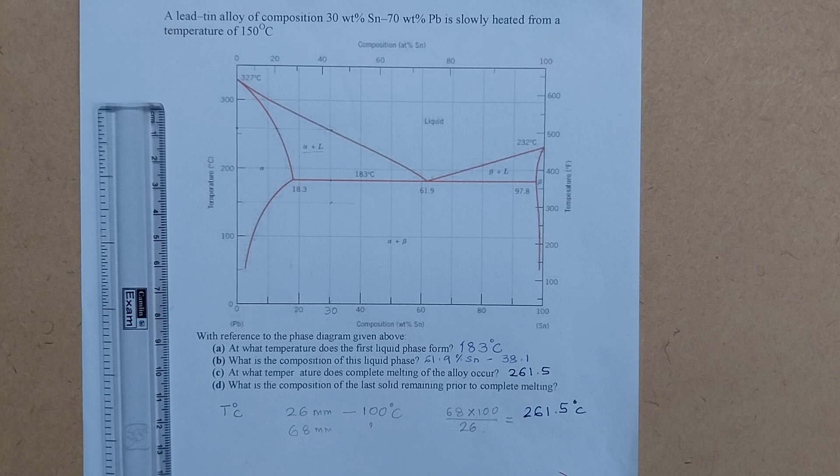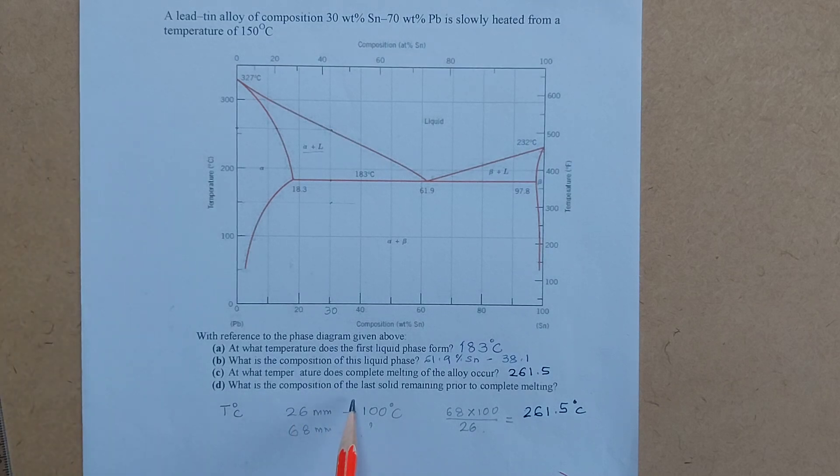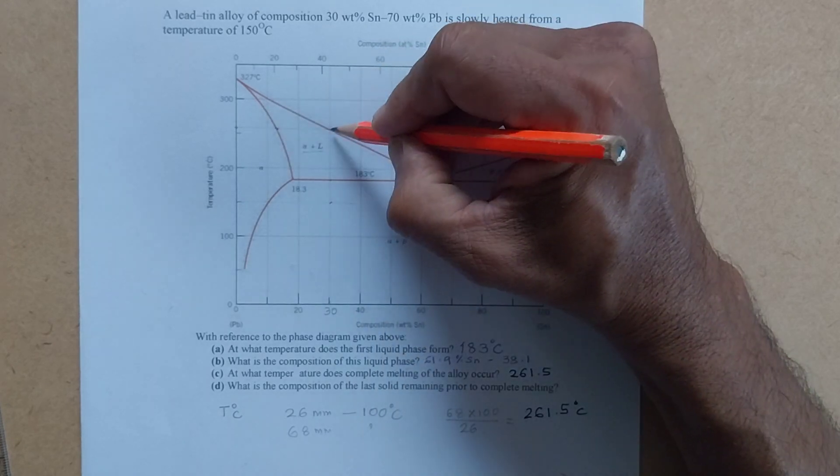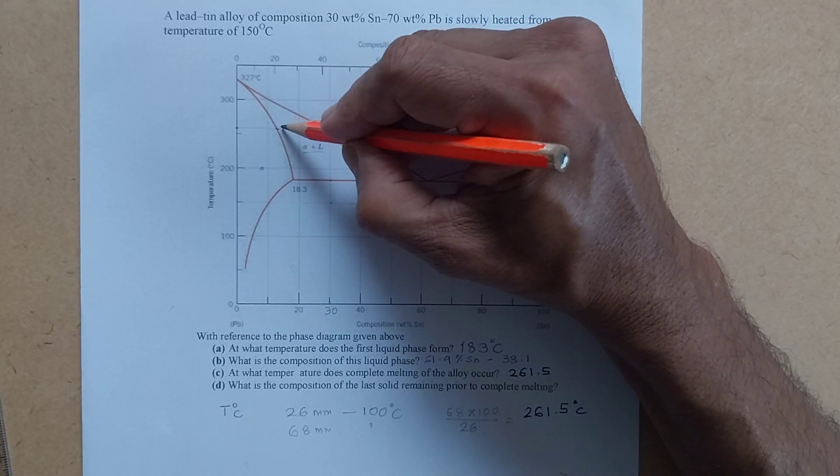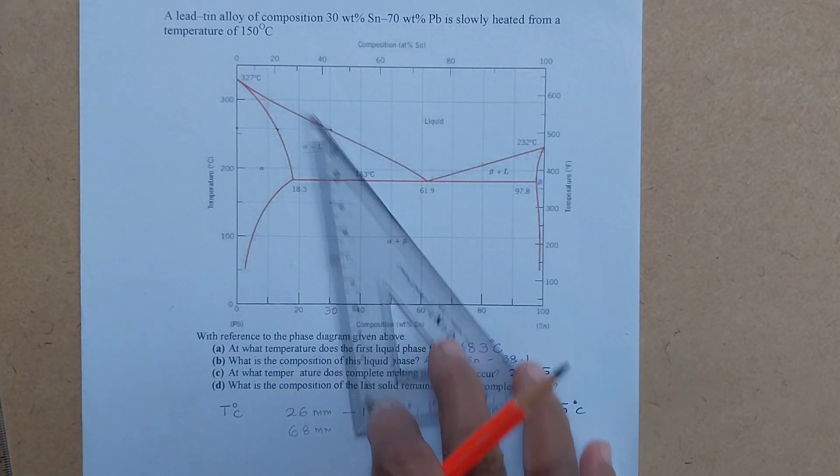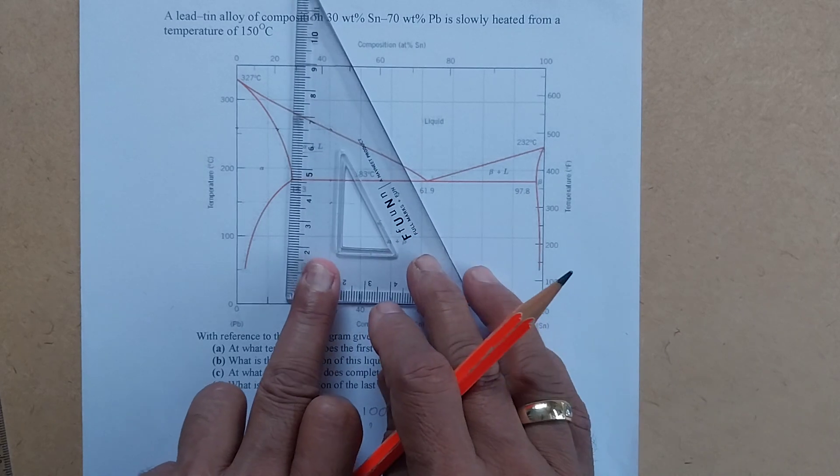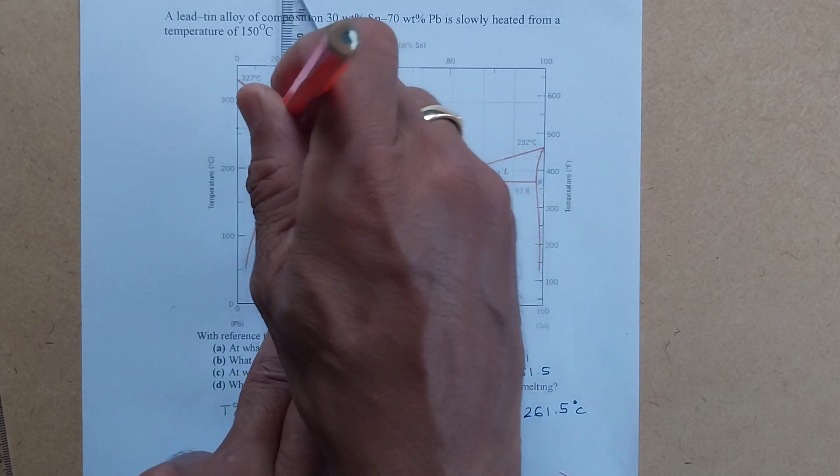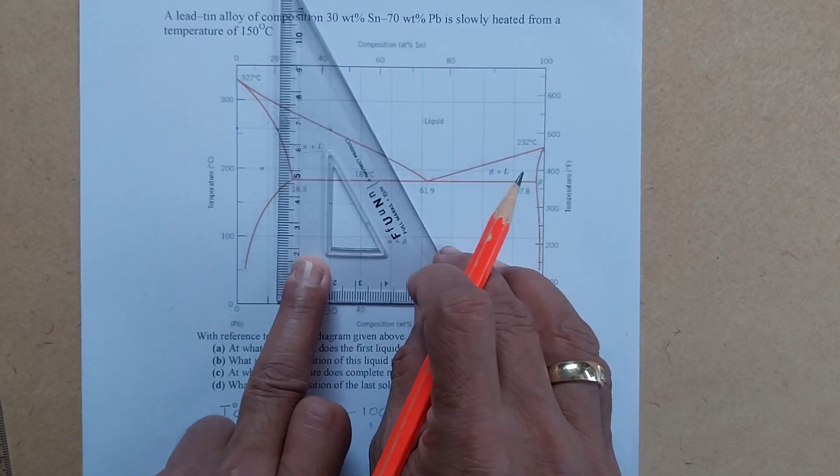And then the last part says, what is the composition of the last solid remaining prior to complete melting? Now here, the last solid composition can be obtained by dropping a perpendicular from the point here. This is the line that is intersecting. This is the lever. This is touching the liquidus line. This is touching the solidus line. And when you draw a perpendicular from that point onto the y-axis, you will get the composition on the x-axis. So when you draw a perpendicular line like this.